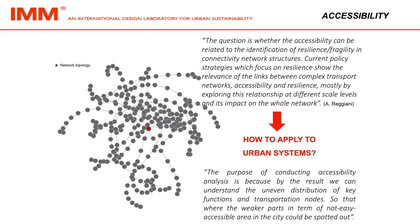The question is whether the accessibility can be related to the identification of resilience, fragility, and connectivity network structures. Current policy strategies focused on resilience show the relevance of the links between complex transfer networks, accessibility, and resilience, mostly by exploring this relationship at different scale levels and its impact on the whole network.